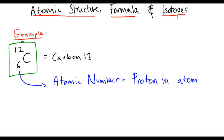And because atoms are always neutral, this is also equal to the number of electrons. So in carbon-12 we have 6 protons, 6 electrons.